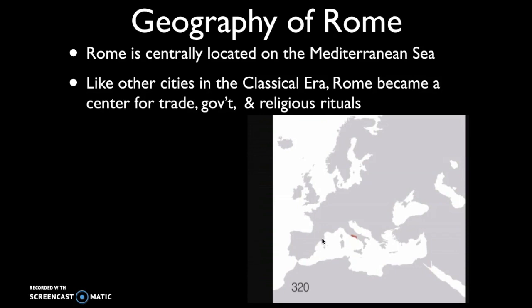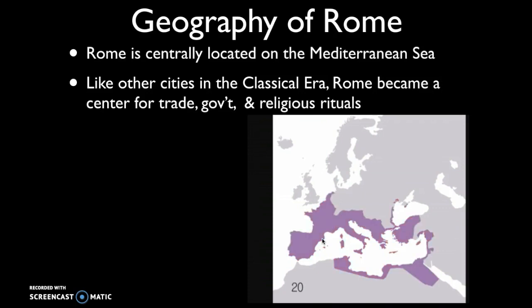Rome starts out as a small city in the 6th century BCE. Over time, it is going to expand across the Italian peninsula and into parts of Europe and over into the Middle East on the Anatolian Peninsula and also into North Africa. Eventually, it's going to spread out across the entire Mediterranean Sea.